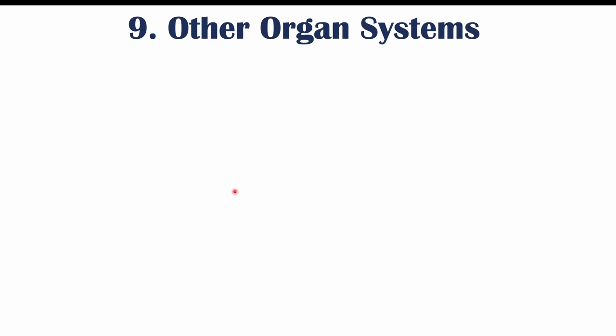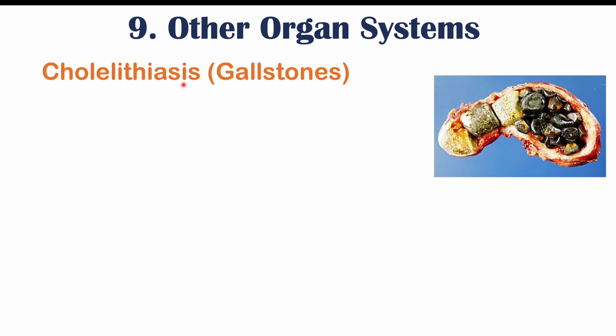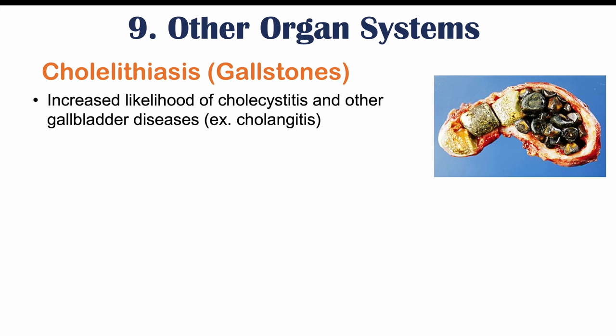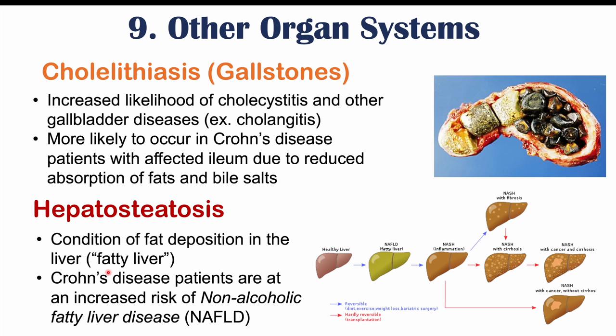Other organ systems can also be affected in Crohn's disease. Cholelithiasis, or gallstones, is more likely to occur in Crohn's disease patients, putting them at higher risk of cholecystitis, cholangitis, and other gallbladder diseases. Gallstone formation is more likely when the ileum is affected due to reduced absorption of fats and bile salts. Hepatosteatosis — fat deposition in the liver, or fatty liver — and non-alcoholic fatty liver disease are also more common in Crohn's disease patients.